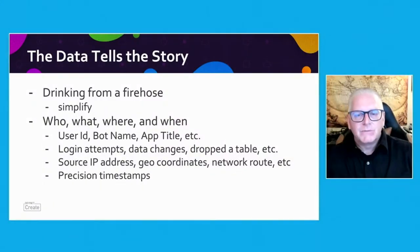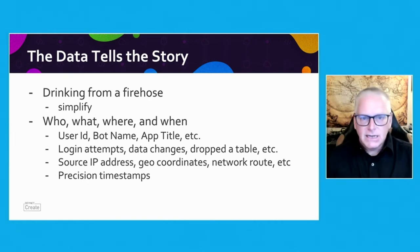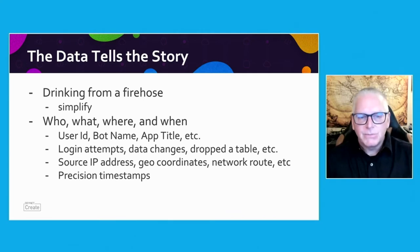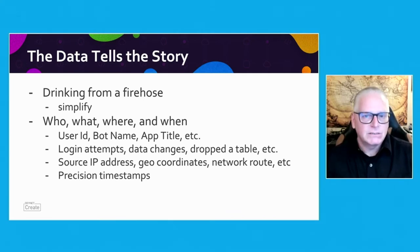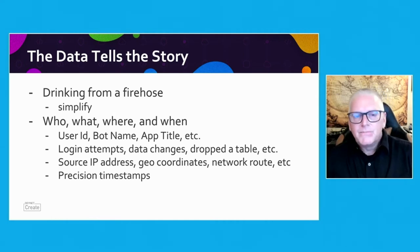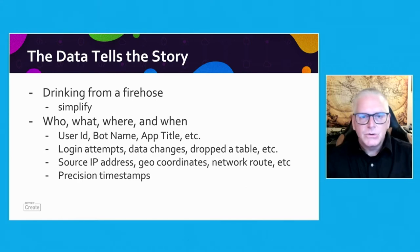First, we have to get through drinking from a fire hose — an amount of data coming from different directions, parsing, checking, testing, analyzing, moving, et cetera. Just huge amounts. We're going to try to simplify that down into basic metrics, then analyze those. For our story, we also need to know certain types of information: the who, what, where, when.